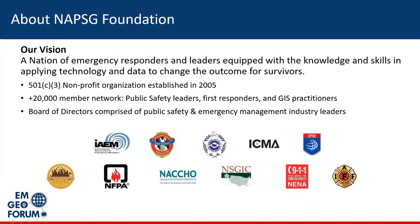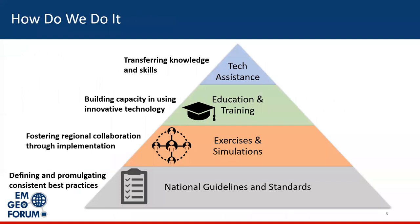I wanted to start off with a little bit of background. For those new to our organization, the National Alliance for Public Safety GIS Foundation is a 501(c)(3) nonprofit with a national network of over 20,000 members — both public safety and GIS practitioners — representing local, state, tribal, and county levels. Our vision is to help build a nation of emergency responders equipped with the knowledge and skills to apply technology and data to change the outcome for survivors and build a more resilient nation. A large part of what we do culminates in sessions like today, sharing best practices developed by mission partners like FEMA.